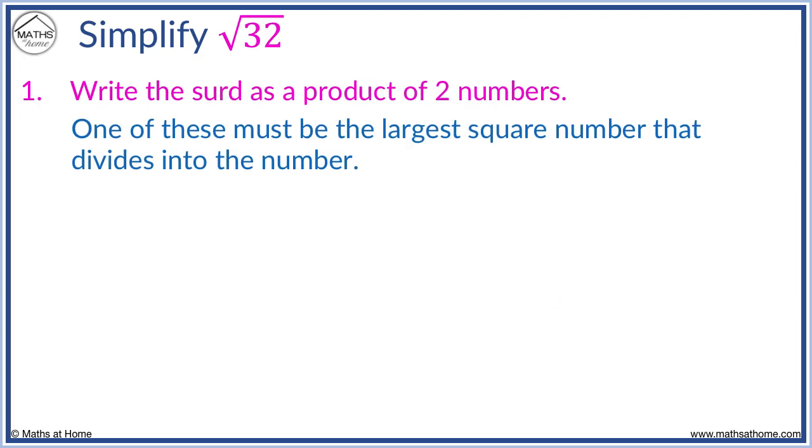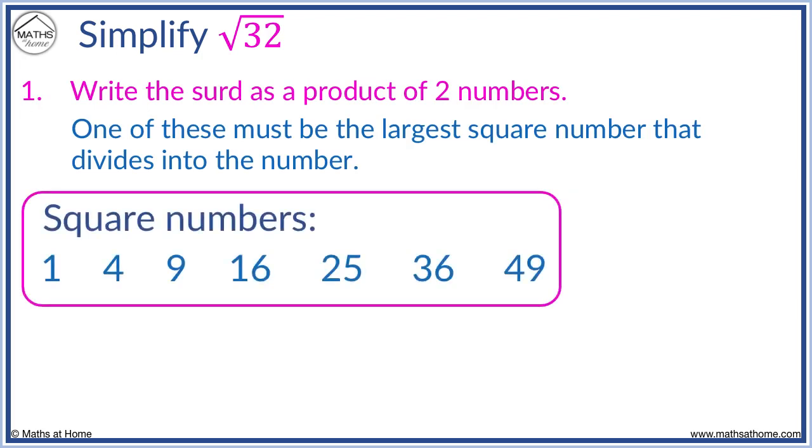Here we simplify root 32. Here are our square numbers. We split root 32 into two square roots. We need the biggest square number that divides into 32. Although 4 goes into 32 we choose 16 because it is larger. 16 times 2 equals 32.